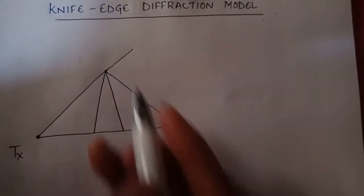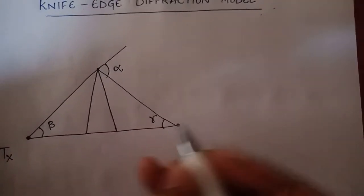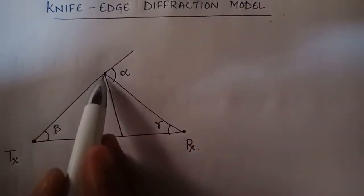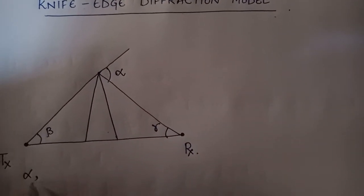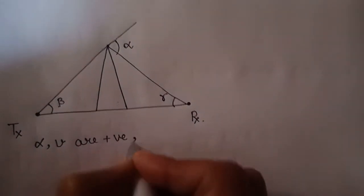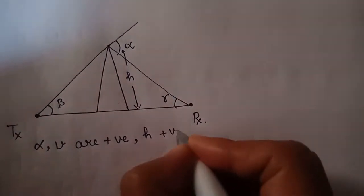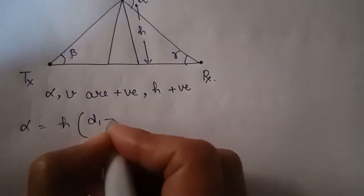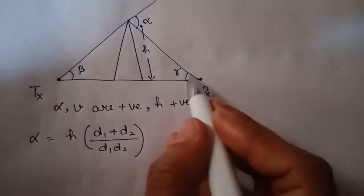In this case we have angles alpha, beta, and gamma. These angles remain the same; only alpha varies depending on the height of the obstacle. When the obstacle is higher, v and h are positive. The value of alpha is: alpha equals h times (d1 plus d2) divided by (d1 times d2). Beta and gamma remain the same.